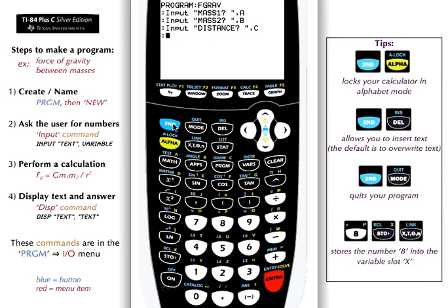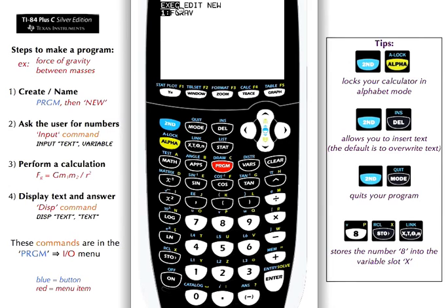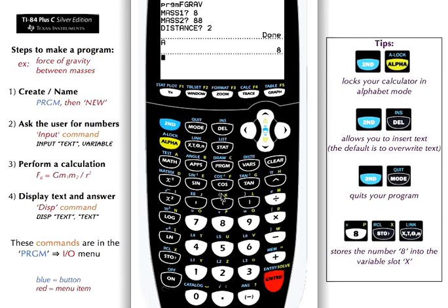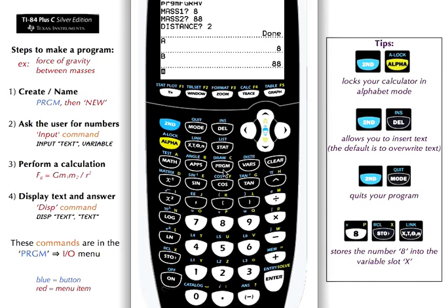Let's test this out. Leave the program — second, quit. Program, I'm going to run it now. Execute gravity. Now I see it displays mass 1 — I'll put in 8. Mass 2, 88. And distance, 2. That's stored A as 8, B as 88, and C as 2.